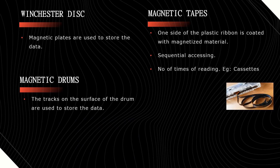Magnetic tapes. Generally, to store large files we use magnetic tapes. It is made up of one plastic ribbon. One side of this ribbon is coated with magnetizable material, and only that side is used for storing the data. The data can be accessed in a sequential manner, meaning one after the other only we have to get the data.